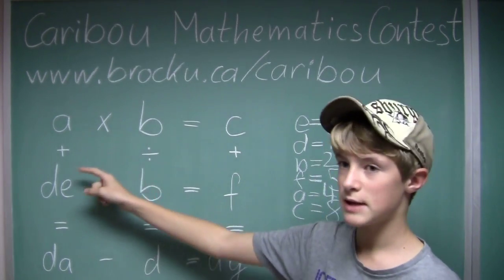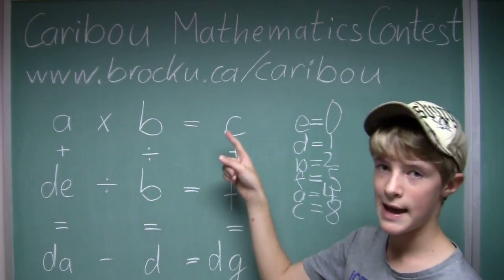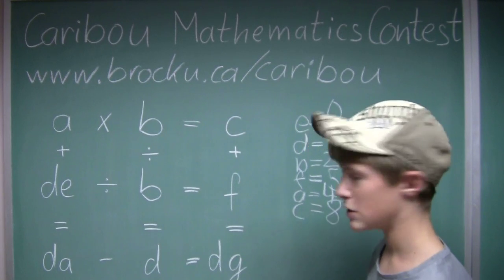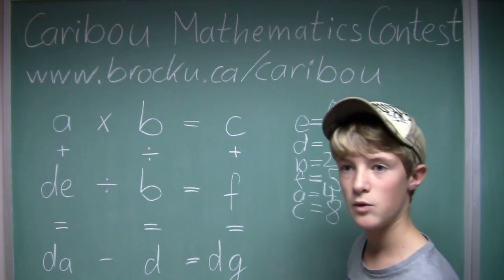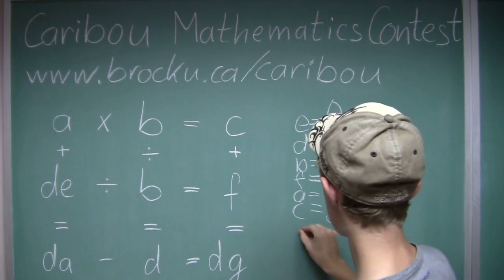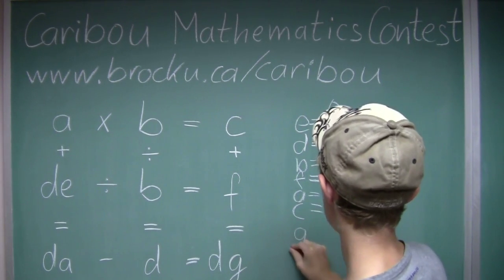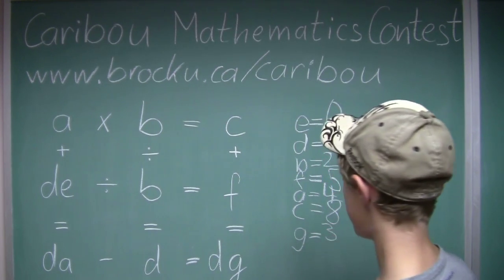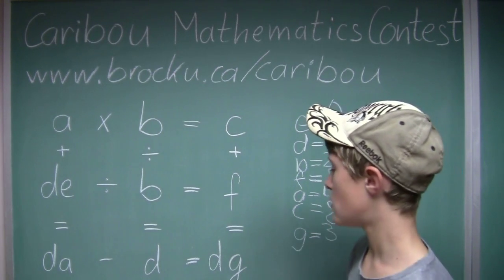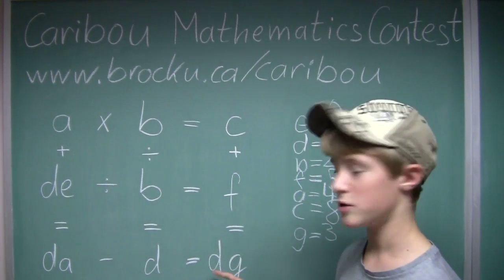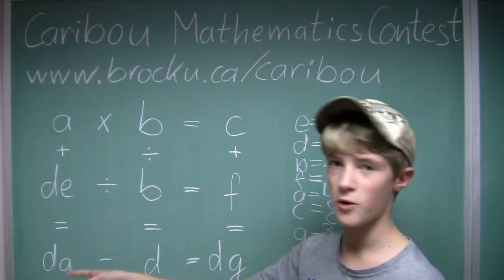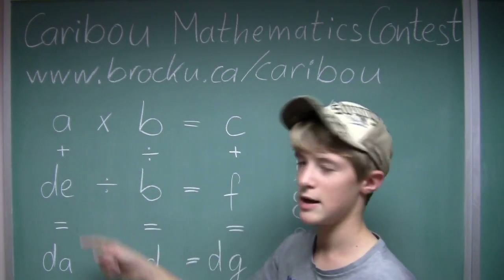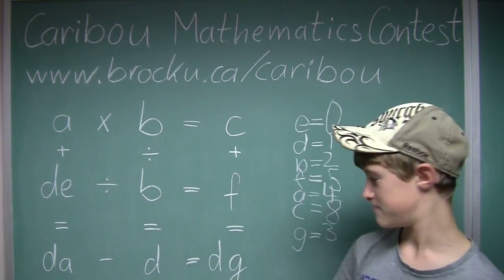So 4 times 2 equals 8. And 8 plus 5 equals 13. So g would have to equal 3. Now we have 13 plus 1 equals 14. And 4 plus 10 equals 14. And that would be perfect.